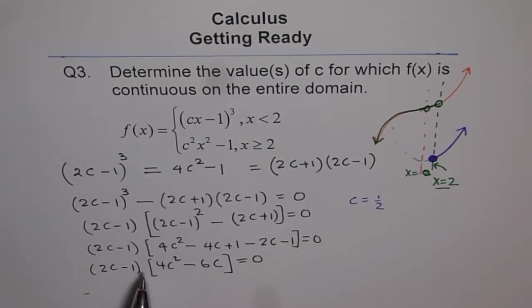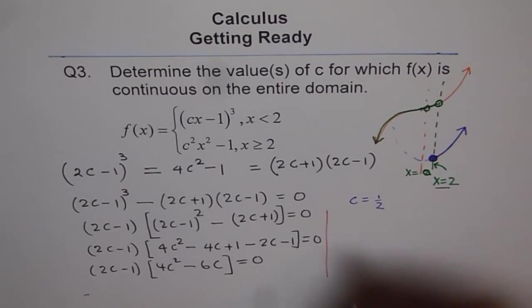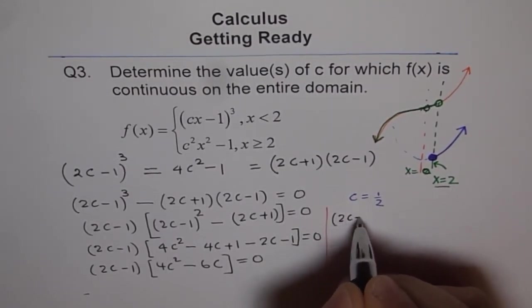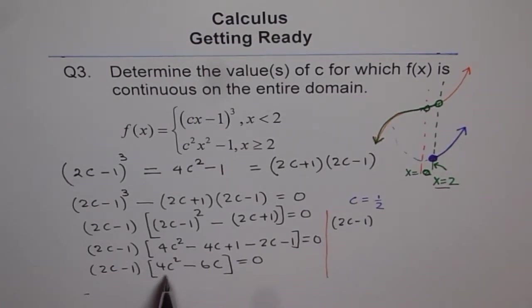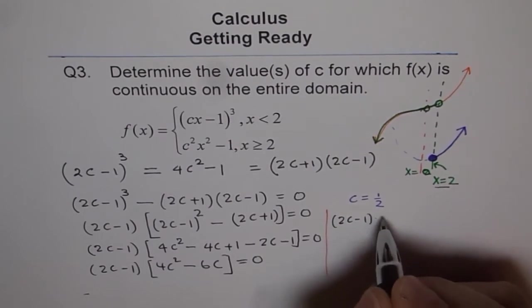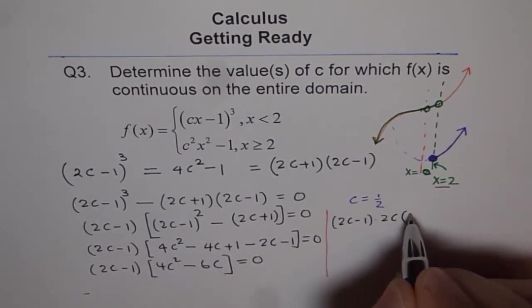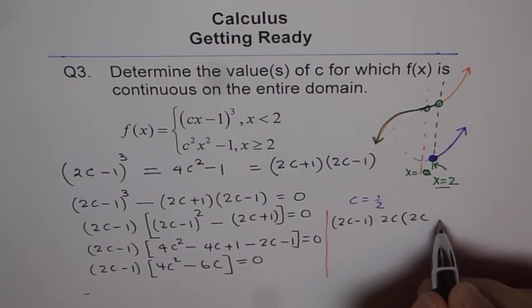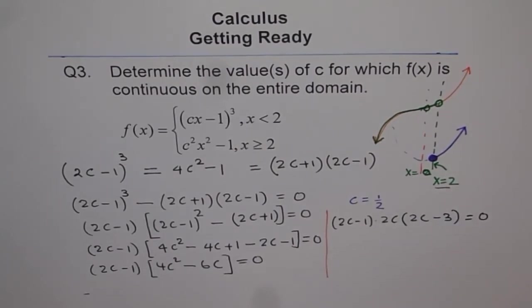And then we can write this as (2c - 1). Let me club some terms if possible. Minus 6c and plus and minus 1 is 0, equals 0. So here also we get a factor. So we say times 2c and here we can factor out 2c. We get 2c - 6 divided by 2 is 3. So minus 3 equals 0.